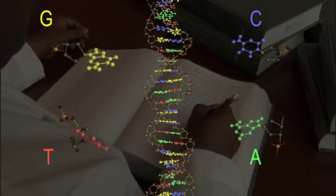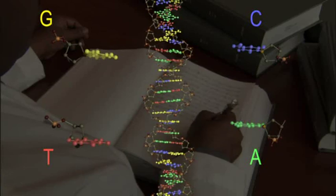There are two of these base molecules for each step on the ladder, and it is always either A and T together, or G and C together. So if you know one side of the step on the ladder, you automatically know the other side as well.